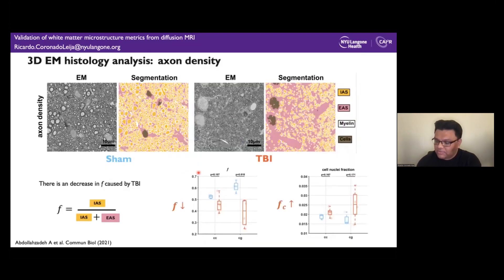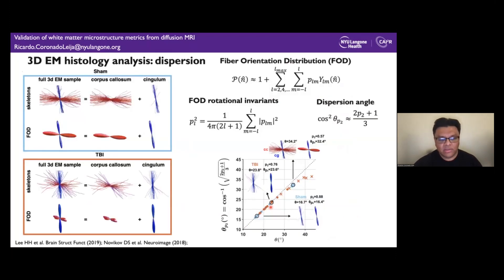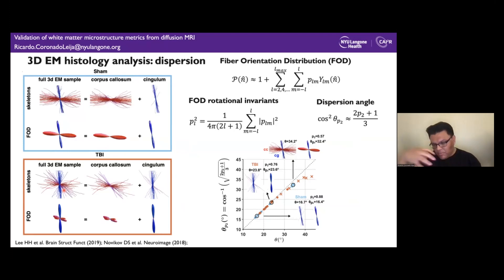From this analysis, we observed a reduction in axon density that would produce a reduction in the intra-axonal water fraction. We also computed the fiber orientation distribution from the axon skeleton — a different approach from previous studies that used structural tensor analysis. Because we had the actual segmented axons, we computed the skeleton of each axon, built a histogram on the sphere, and computed the spherical harmonics.